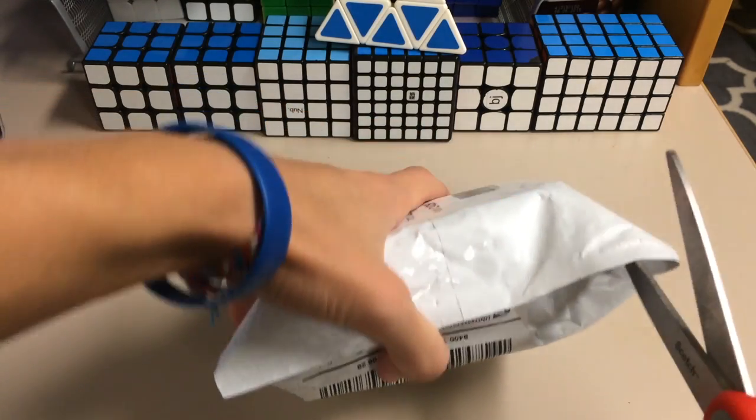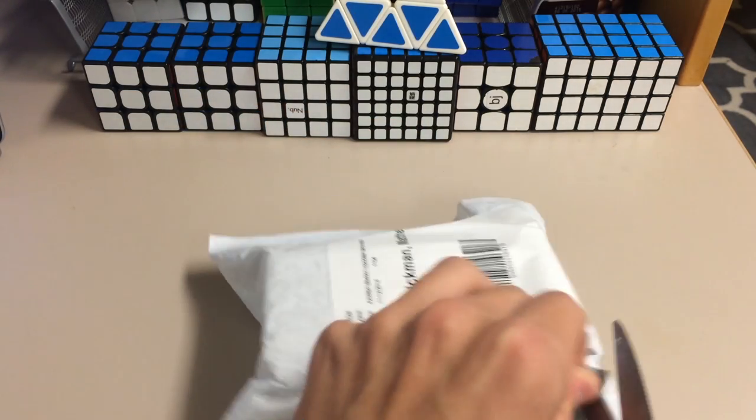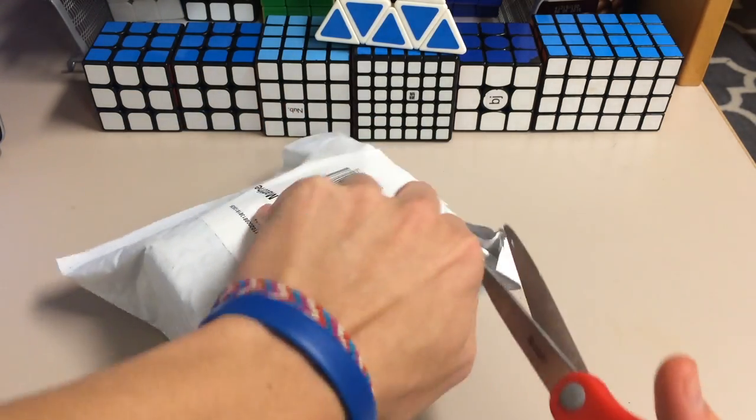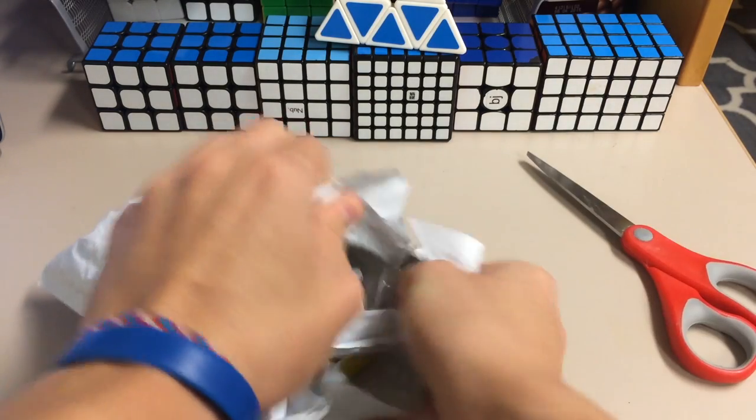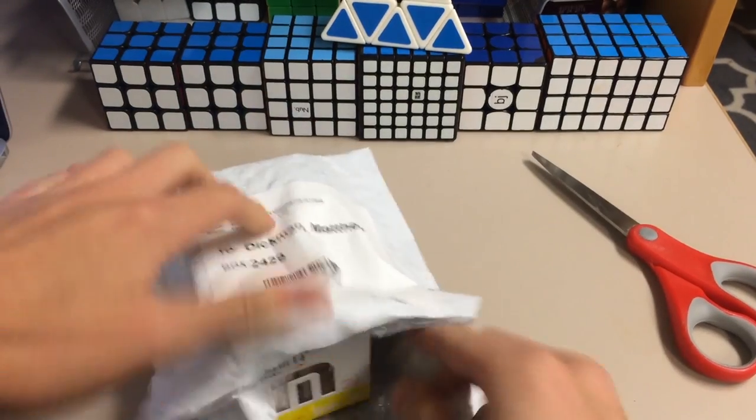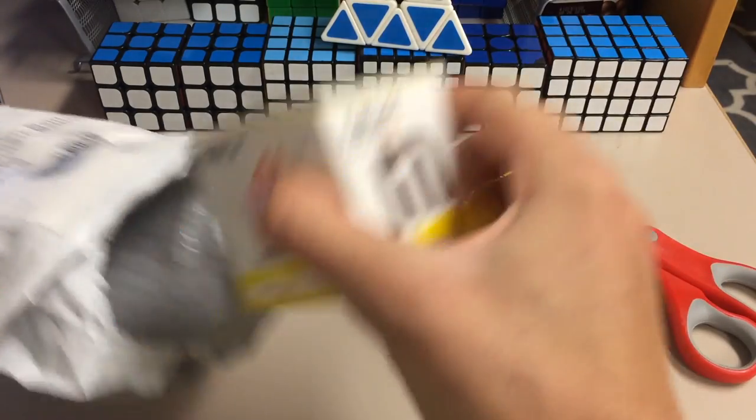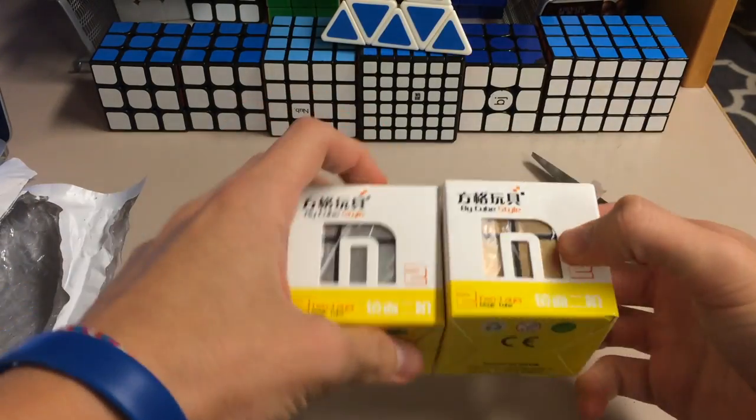So in this package, they sent me a gold and silver mirror block 2x2. And I was actually expecting a different package today, which you guys will be seeing soon from TheCubicle. But here we have the silver and gold mirror block 2x2s.